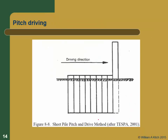Let's talk a little about the driving process. These figures come out of the FHWA manual. There are three ways of driving. The least common — done only for small projects — is called pitch driving, where you just drive one pile, put the next one up, drive that down, and keep going down the line. It doesn't give you much control over placement and tends to cause a lot of wandering. If they start to wander off in one direction, it's really hard to keep them lined up.